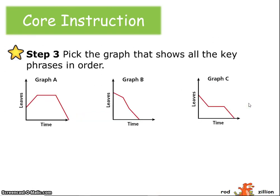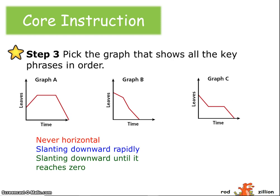Ultimately, what this means is that we need to pick the graph that shows all the key phases in order: never horizontal, slanting downward rapidly, slanting downward until it reaches 0. And the correct graph, of course, will be graph B.